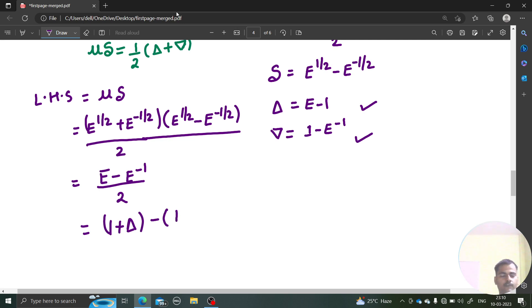If I see e from here, that will be 1 plus delta, 1 plus forward difference operator. And if I see your e power minus 1, that will be 1 minus backward difference operator. Divided by 2.